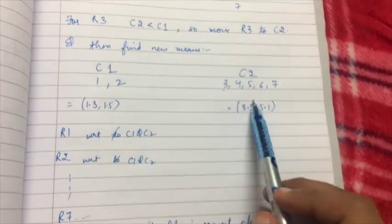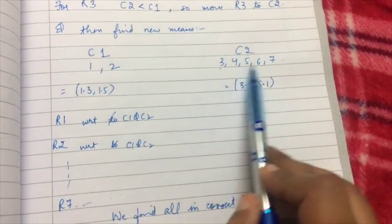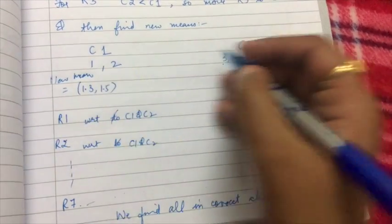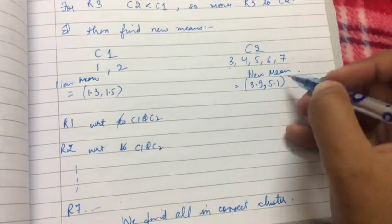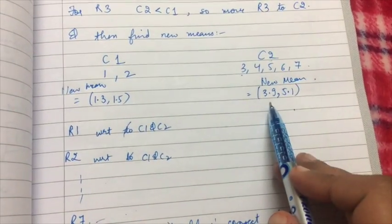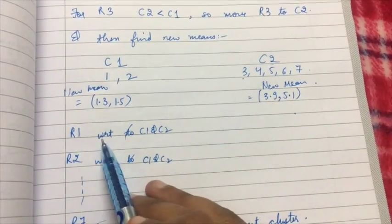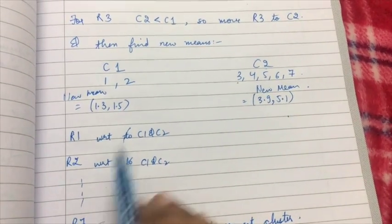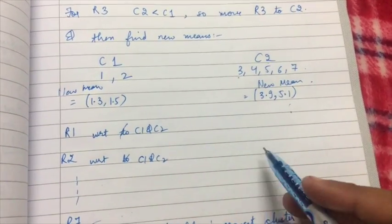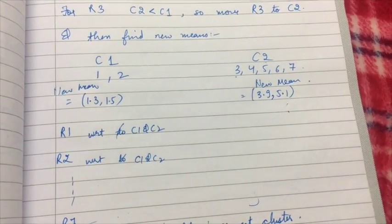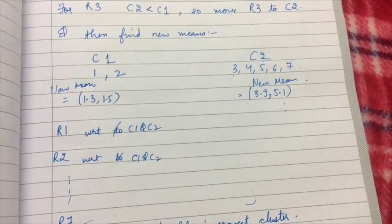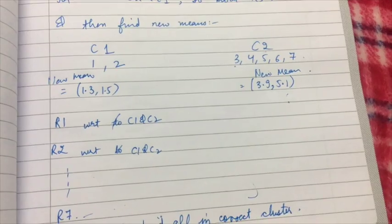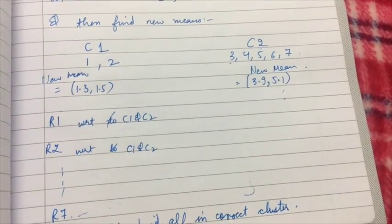When I shift record three from cluster one to cluster two, the contents of both clusters have changed again, so I must find new means for both clusters. I then again calculate the Euclidean distance of every record — R1, R2, R3, and so on — with respect to C1 and C2 using the new means. This time I will see that all items have been placed in the correct cluster and none needs to be moved.